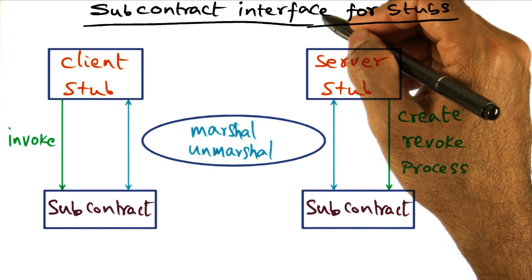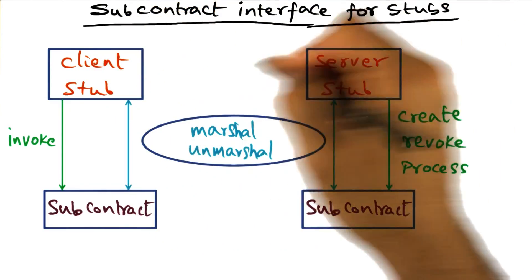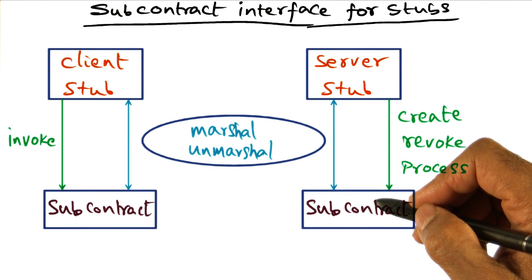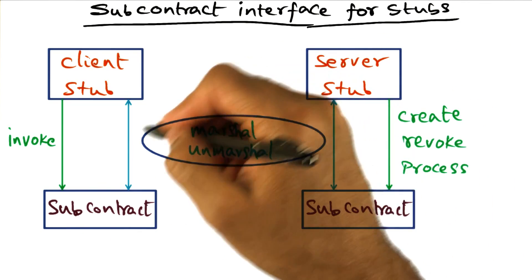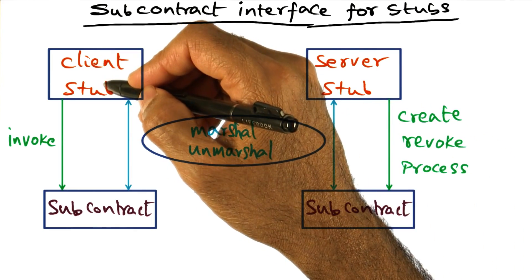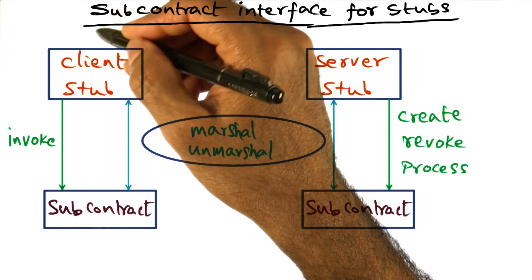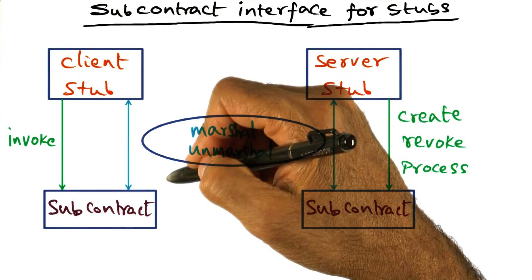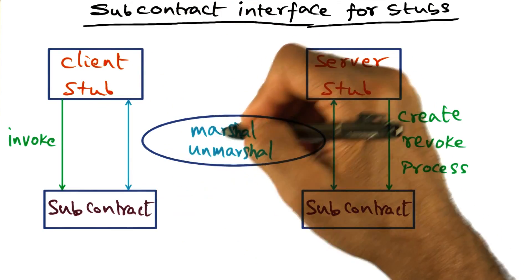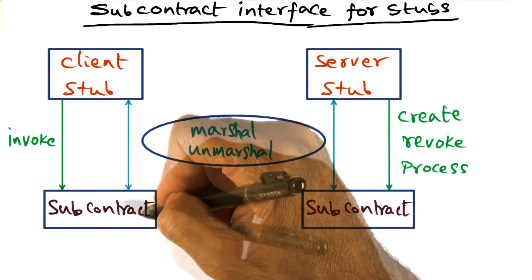Let's look at the interface available for the stub on the client side and the server side through the subcontract mechanism. The first interface is for marshalling and unmarshalling. The client side stub has to marshal the arguments from the client, and to do that, it makes calls on the subcontract saying: marshal these arguments for me, and the subcontract will do that.